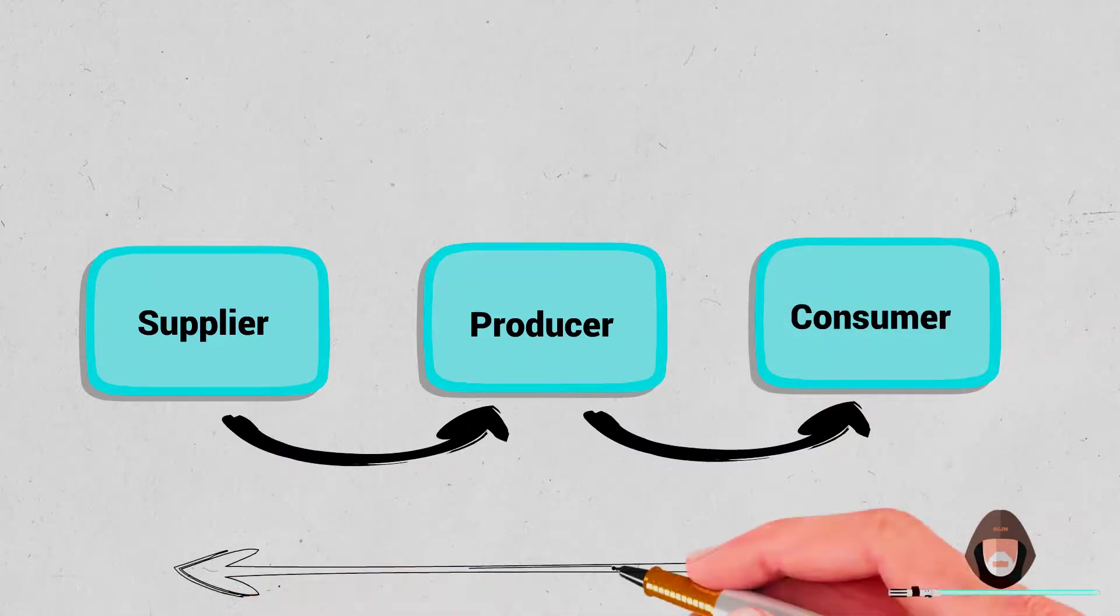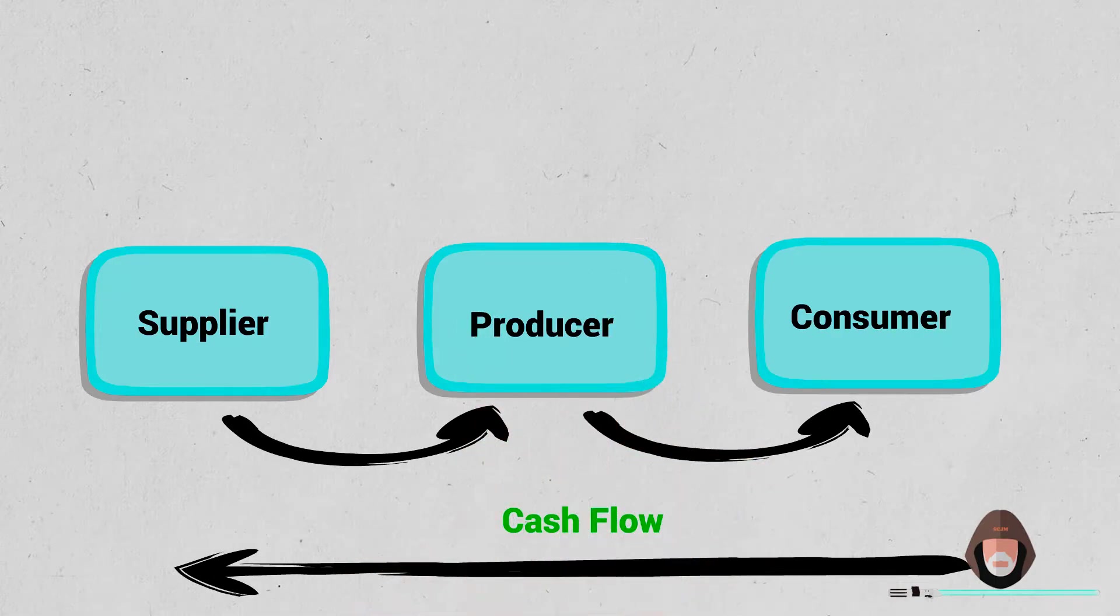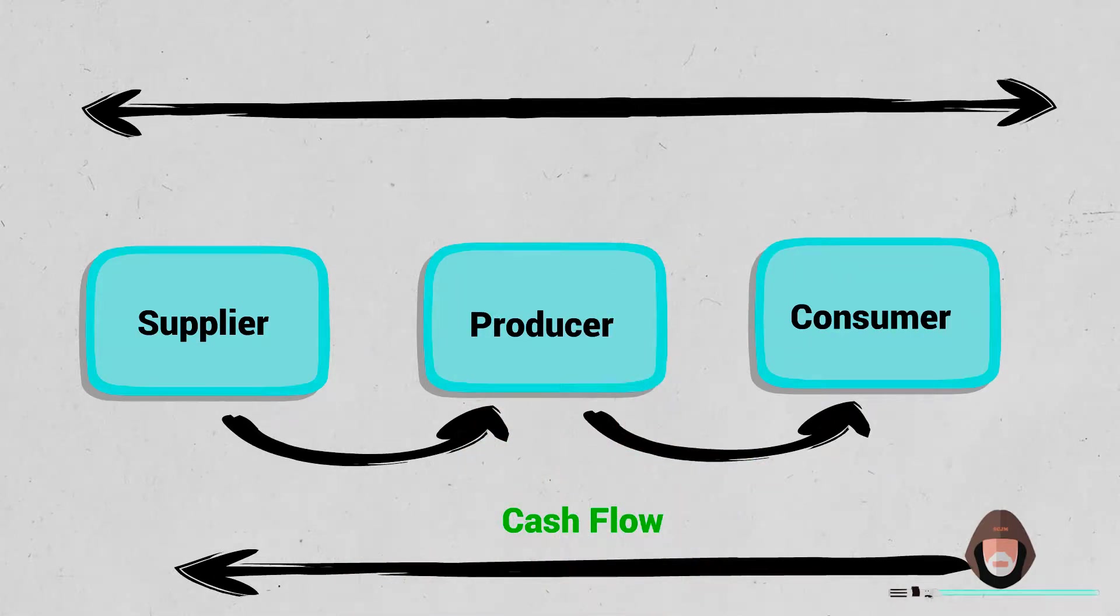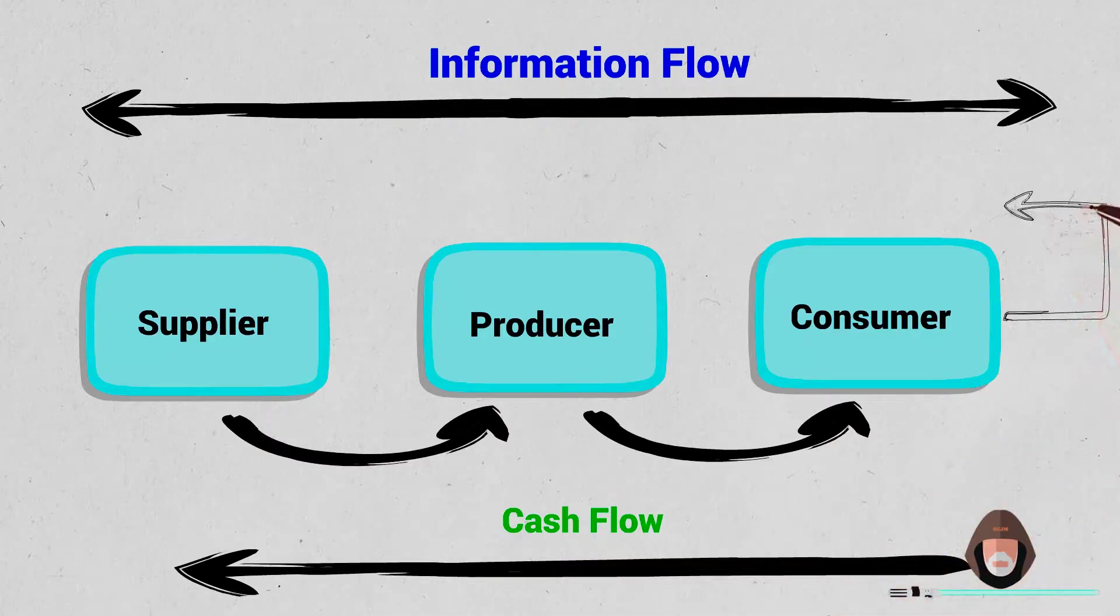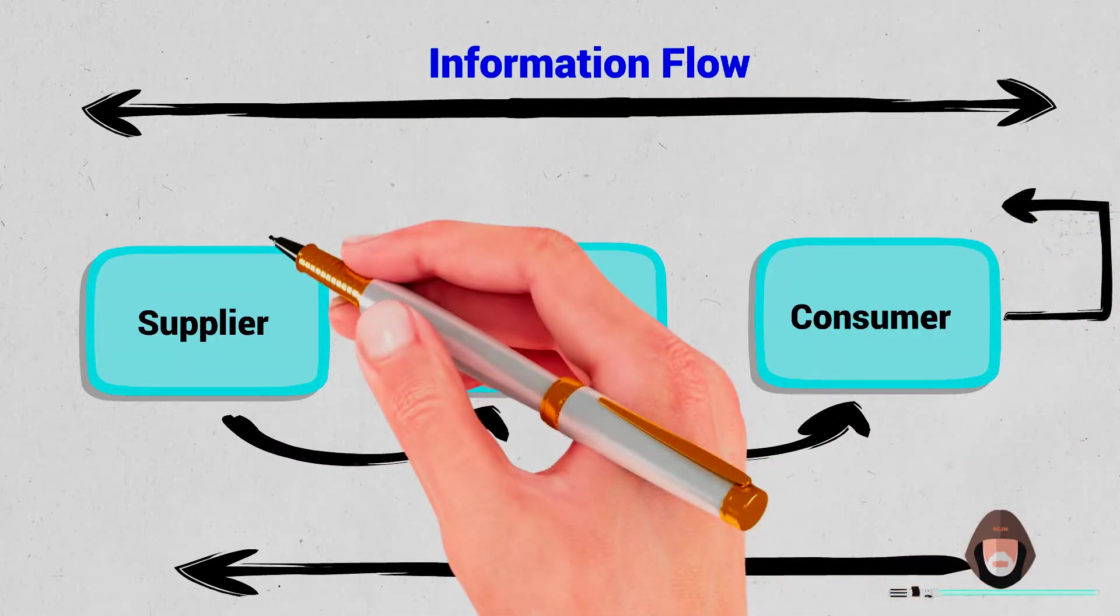We also notice there is a flow of cash from customer back toward raw material supplier, flow of information back and forth along the chain, and finally, the reverse flow of products returned for repairs, recycling and disposal.